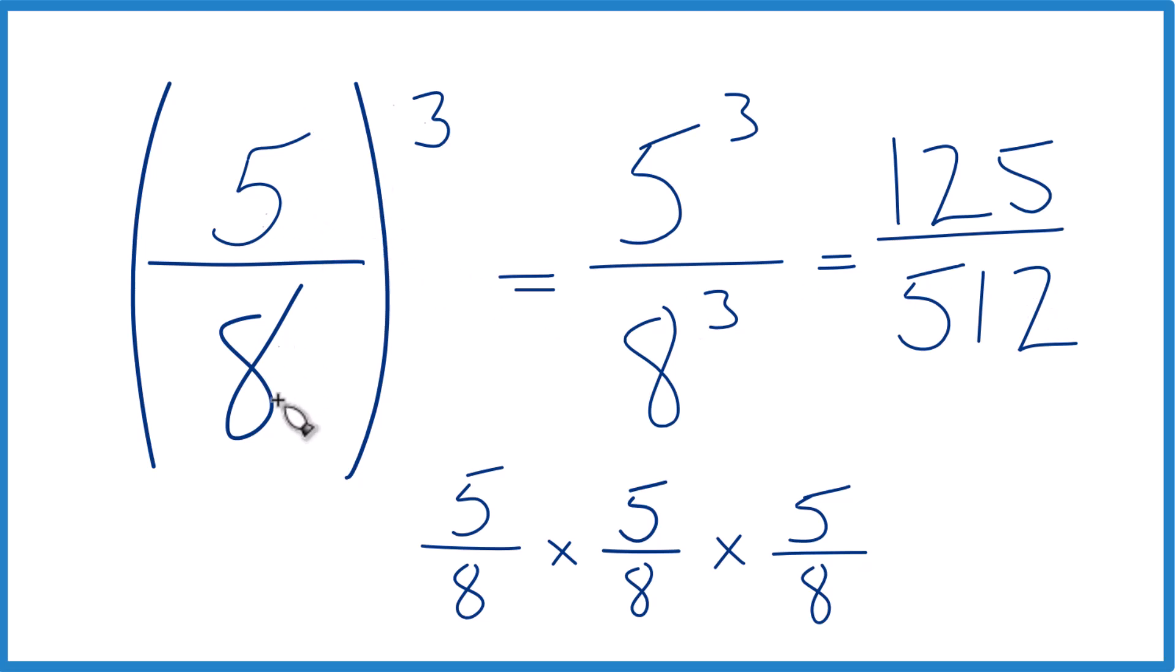So when we take five-eighths to the third power, five-eighths cubed, we get the fraction 125 over 512.